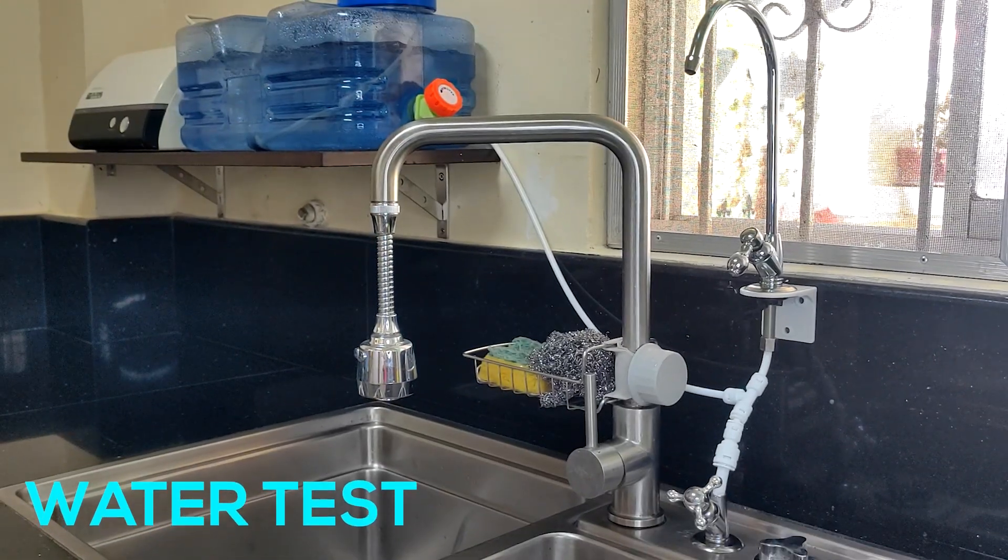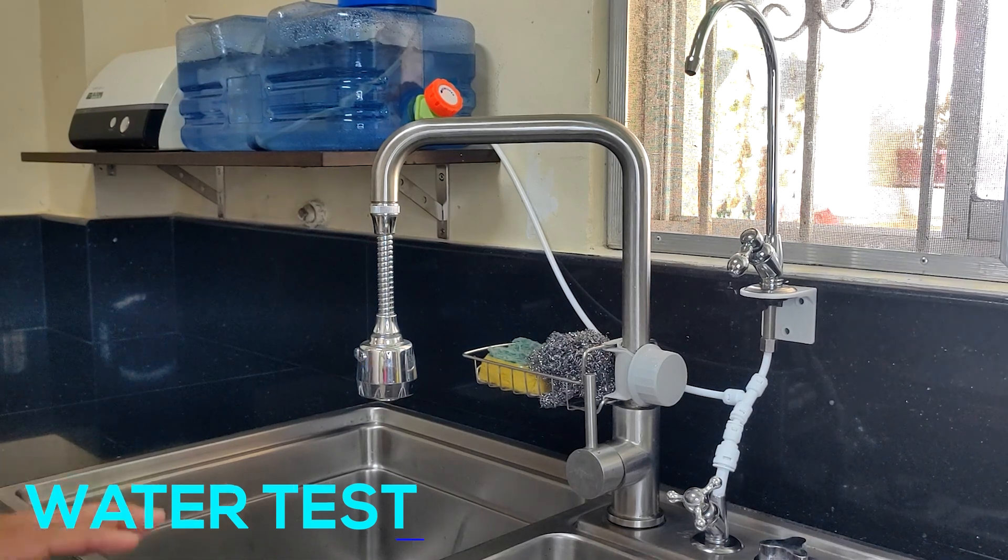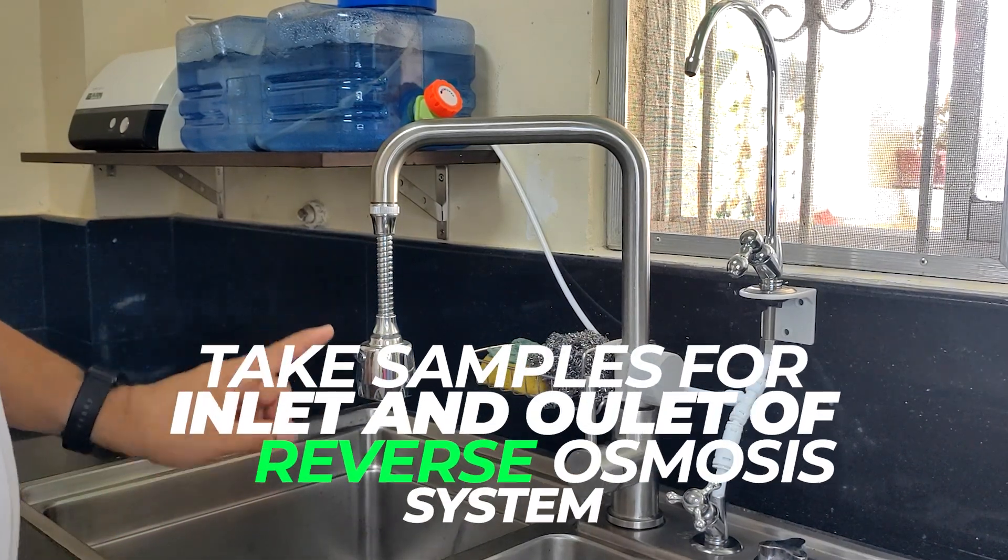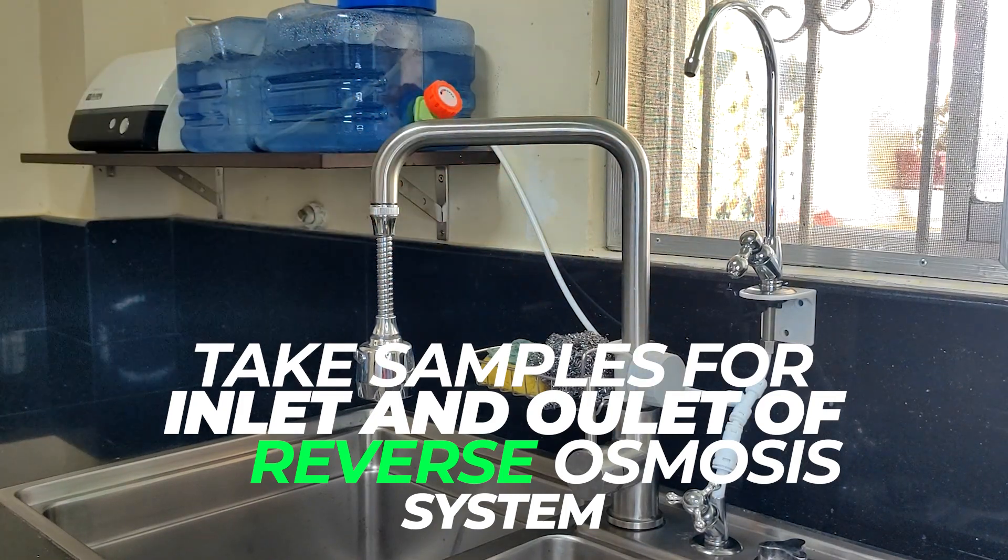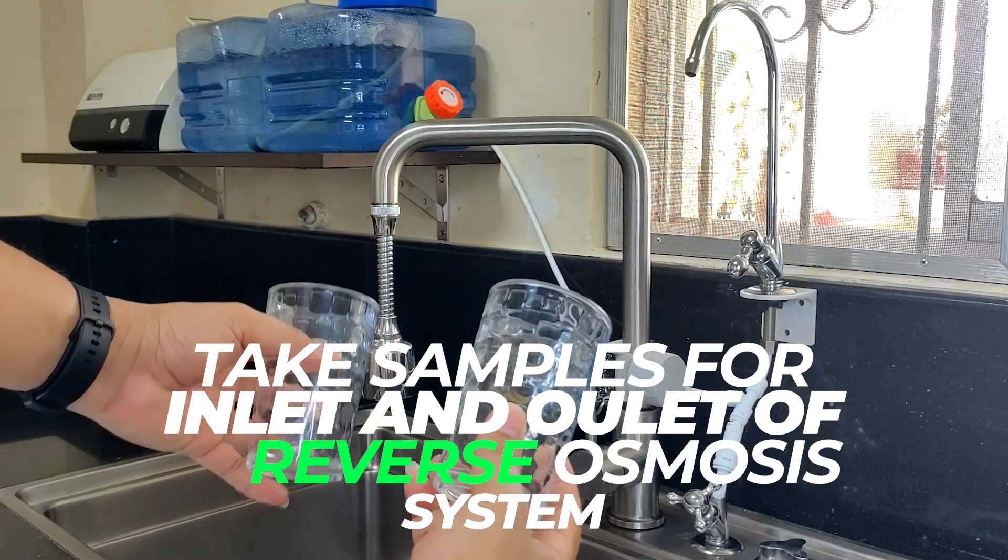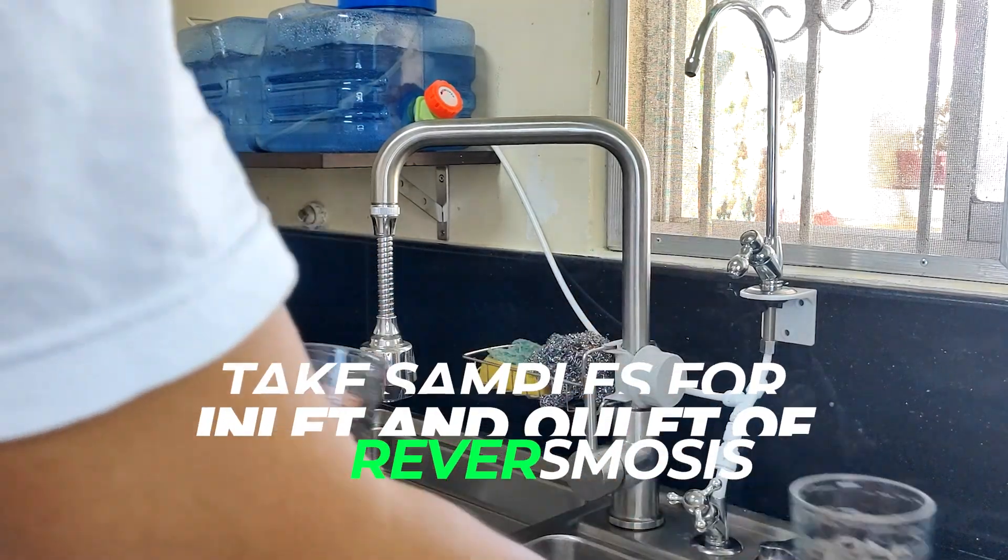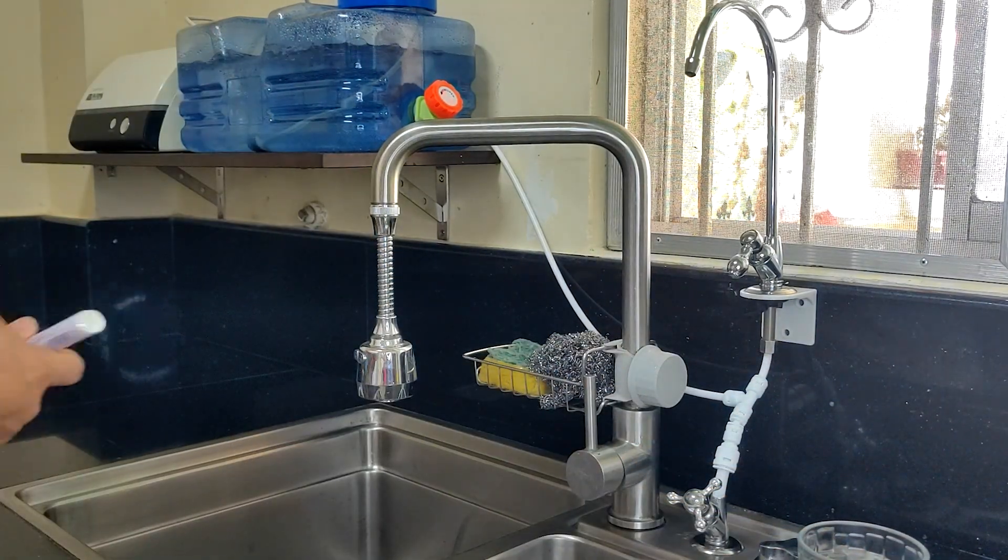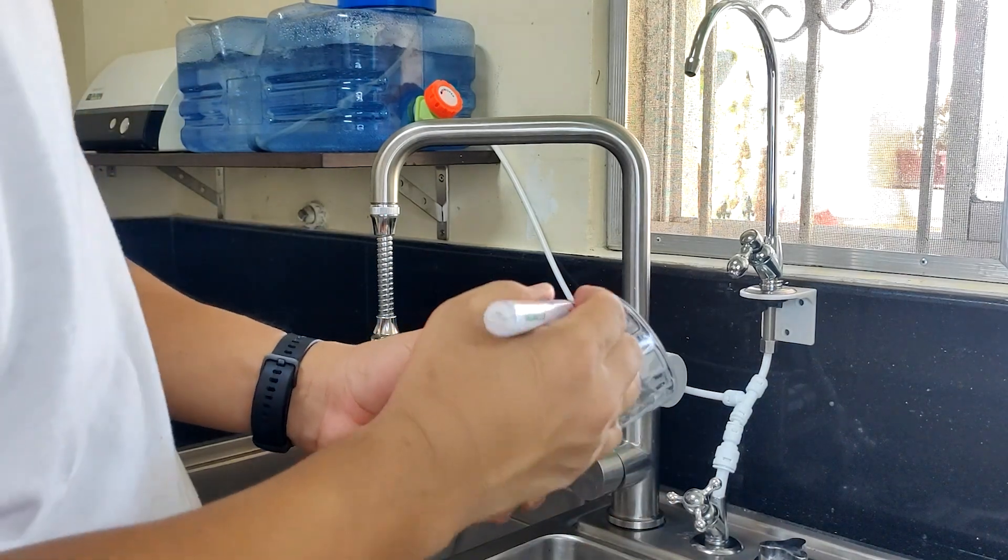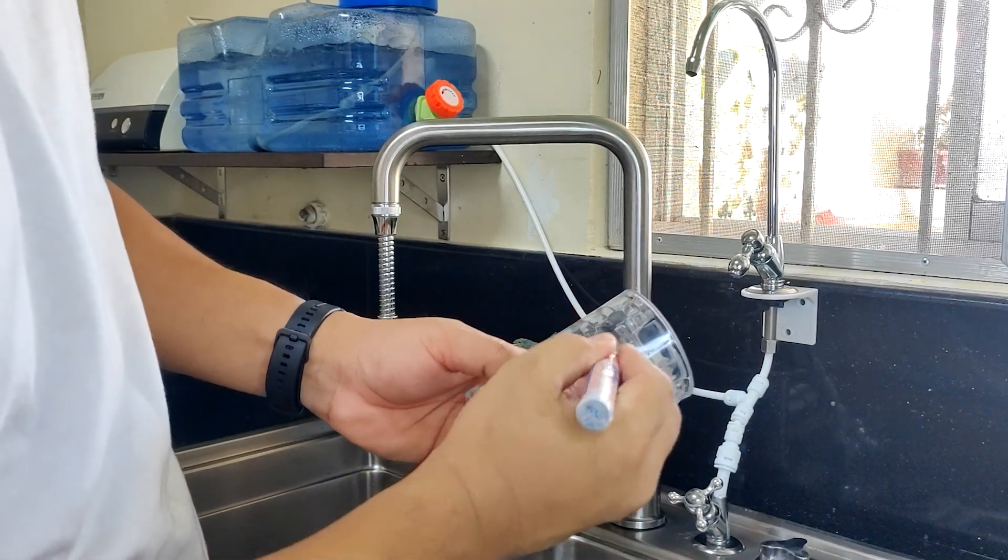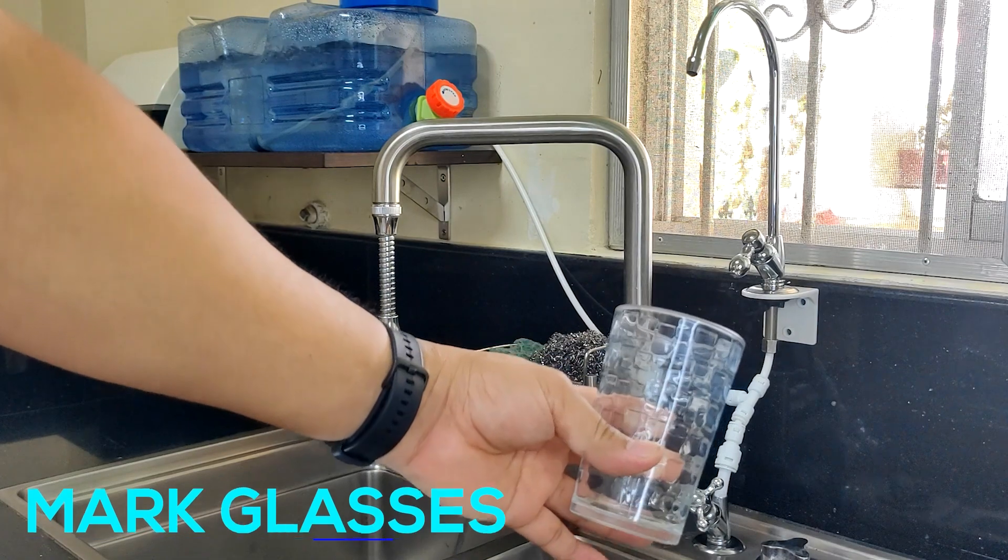Now then, let's proceed with the water test. First, take samples from your raw water or water inlet, and then the product water from your RO system. In this way we can check the difference of the TDS being filtered by your system and if it is really working well. Make sure to mark the glasses.